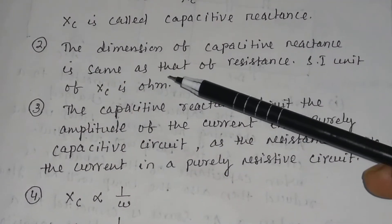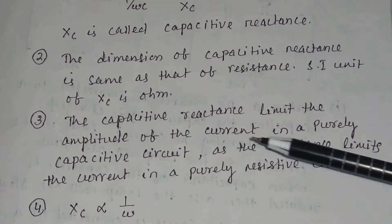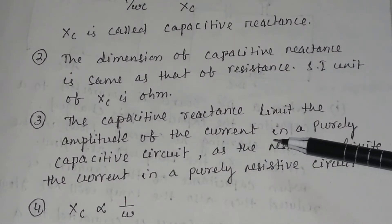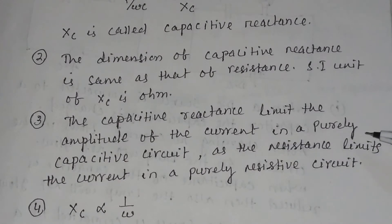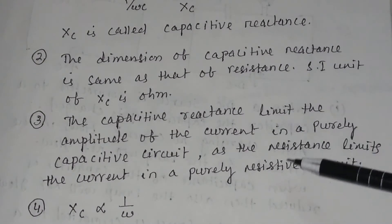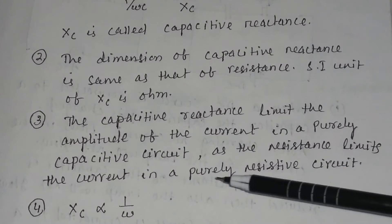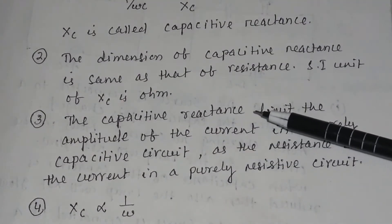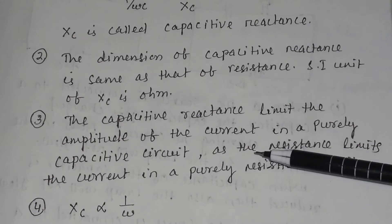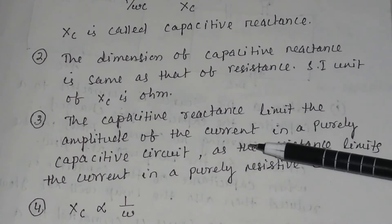The SI unit of capacitive reactance is Ohm. The capacitive reactance limits the amplitude of the current in a purely capacitive circuit, just like resistance limits the current in a purely resistive circuit. In a resistive circuit, resistance limits the current, and in a capacitive circuit, the capacitive reactance limits the current.